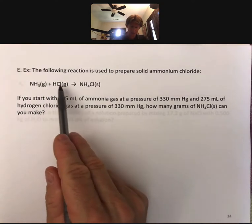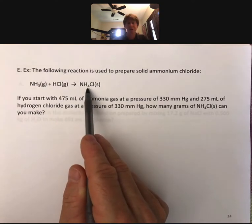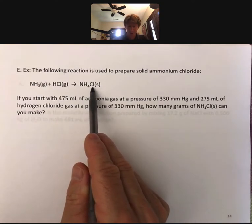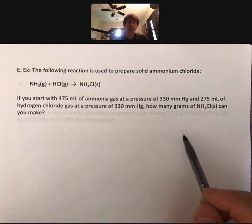You're going to find the moles of each of these, then do a mole-to-mole conversion to find out how many moles of this product you can make, and once you have moles of this product, ammonium chloride, you can use the molar mass to find grams.